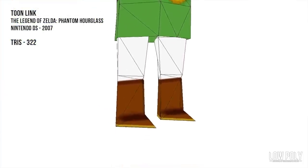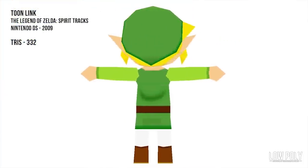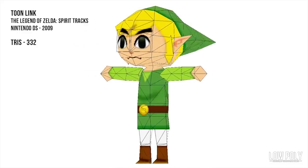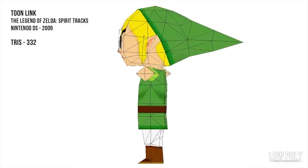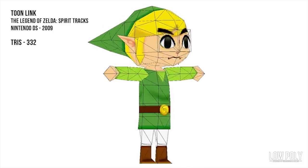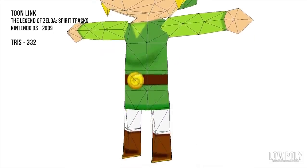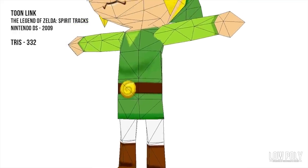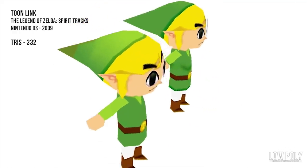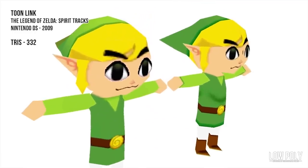We'd see Toon Link again in The Legend of Zelda: Spirit Tracks, using basically the same model that shares almost the same tri count — 332 tris as opposed to 322 in Phantom Hourglass. Not entirely sure where those extra 10 tris are coming from, but they also seem to have added some new textures to emphasize shading in the model. It's basically the same model as Phantom Hourglass.